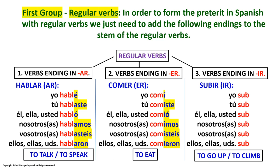Now let's go to the third group of verbs ending in IR. An example is SUBIR, meaning 'to go up' or 'to climb.' In past tense or preterite, this verb would be: Yo subí. Tú subiste. Él, ella, usted subió. Nosotros, nosotras subimos. Vosotros, vosotras subisteis. Ellos, ellas, ustedes subieron.